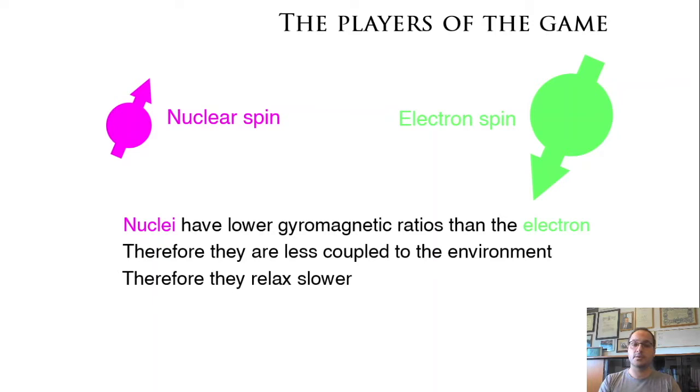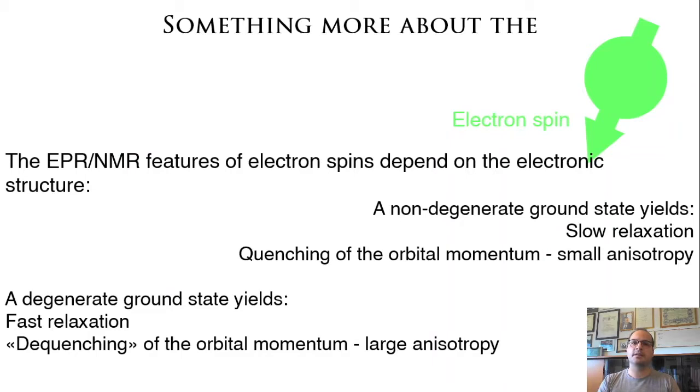Now something more about the electron spin. The properties of electron spins depend on the electronic structure of the metal center the electron spin is associated with. We can make a coarse division into non-degenerate ground states and degenerate ground states.